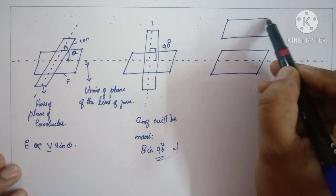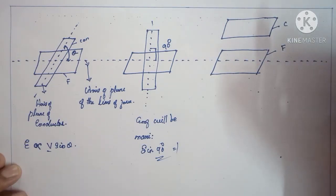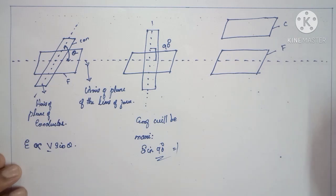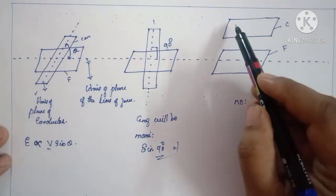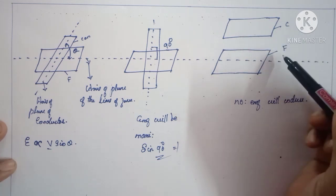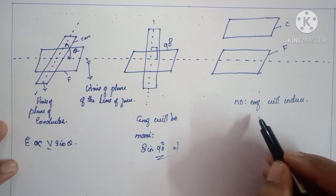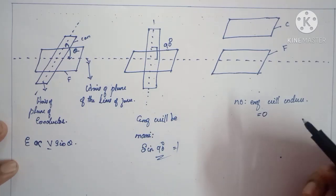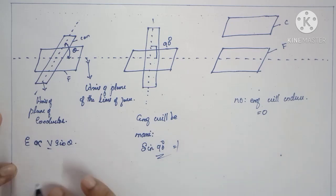In the third case, the field and the conductor are parallel — so no EMF will be induced, because the conductor does not cut any magnetic lines of force. The lines of force will not intersect the conductor, so the induced EMF will be zero. This is the basic working principle of DC generators.